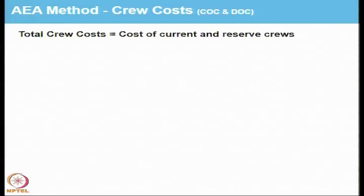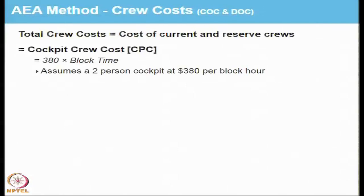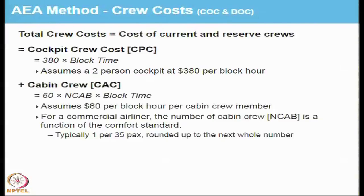Looking at crew costs: these are the cost of the current crew and the reserve crew. Assuming a two-member cockpit crew at 380 dollars per block hour, you multiply the block time by 380. For cabin crew, 60 dollars per block hour per cabin crew member is used. These numbers come from experience and may differ between countries in real life, but for a common comparison platform we use these AEA values.